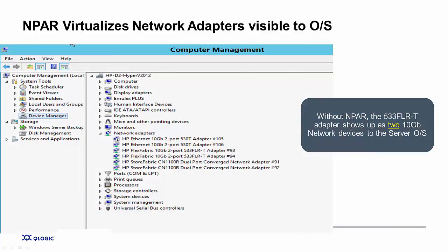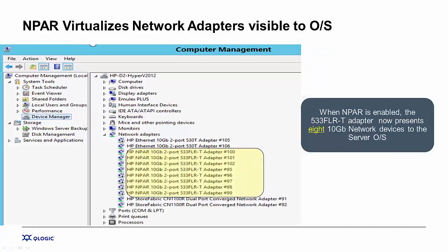Here's a view from the server management console. We're looking at Device Manager in a Windows-based server, and here we can see several network adapters. Focusing on the 533 FLRT for this example — normally it presents itself as just two adapters, but without N-PAR you don't get any benefits of quality of service and are at the mercy of the hypervisor for how data flows to those physical connections. With N-PAR enabled, the 533 FLRT now presents itself as eight adapters to the operating system. Each of those adapters can be set in terms of its bandwidth performance in 100 megabit increments, carving up to 10 gigs on each of those two ports. This allows you to dedicate a specific adapter for a specific mission-critical workload and guarantee the level of performance you're going to get.